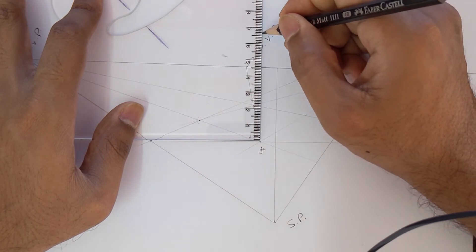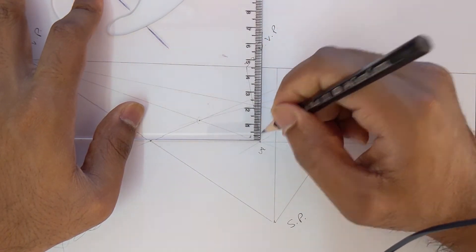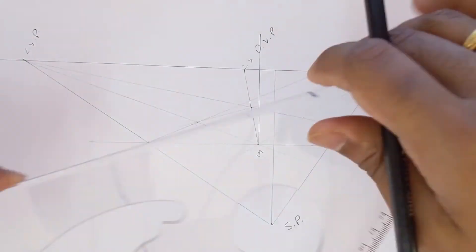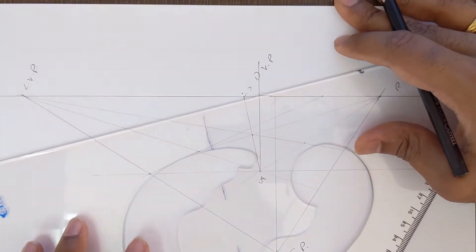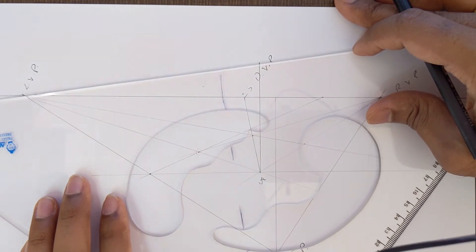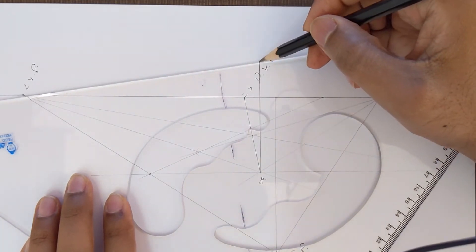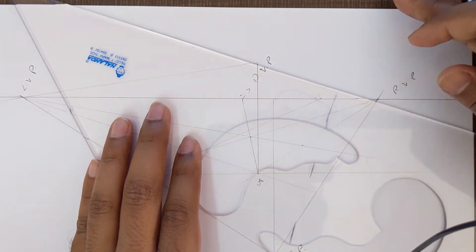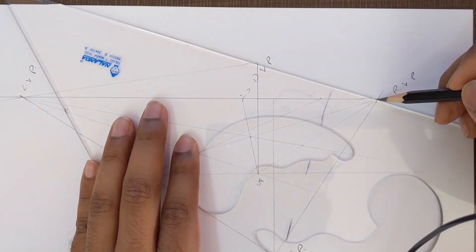Let's say, yes, this is the true height of our cube. Now the next step is going to be very simple. All we have to do is just draw a line to the right and left vanishing point from the vertical.